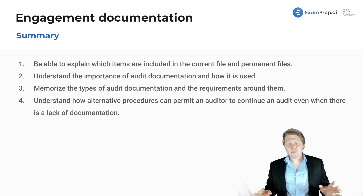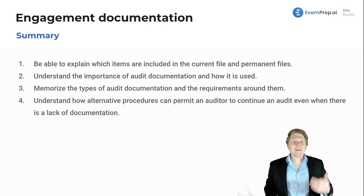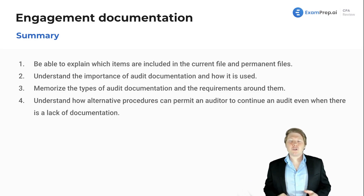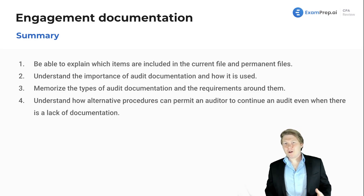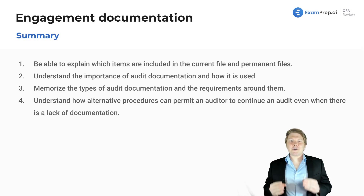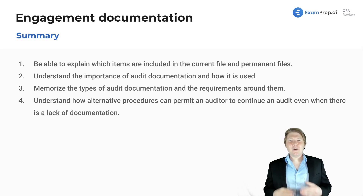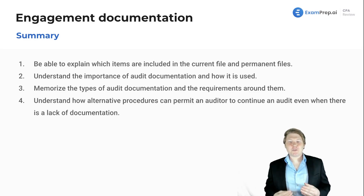Generally, throughout the exam, if there's a roadblock, questions will try to trick you and say, oh, withdraw from the engagement or get out of there or disclaim an opinion — adverse, something like that. There's always a way for you to try to perform alternative procedures. Obviously, after you do those, you may have to still withdraw or give a negative opinion, but your reaction shouldn't be these extremes. Throughout the entire exam, multiple choice questions, Sims — there's never going to be just an immediate extreme, give them a bad mark. No, try to perform an alternate procedure.